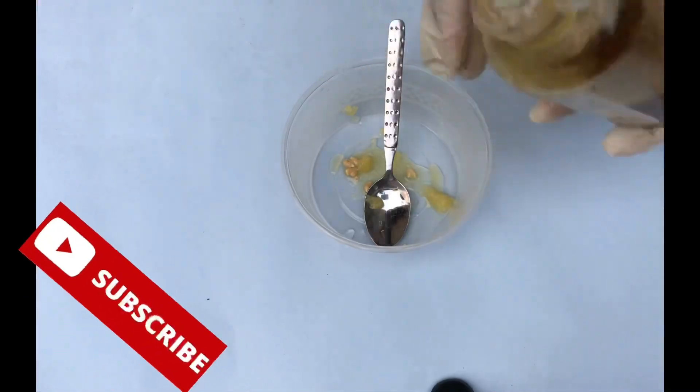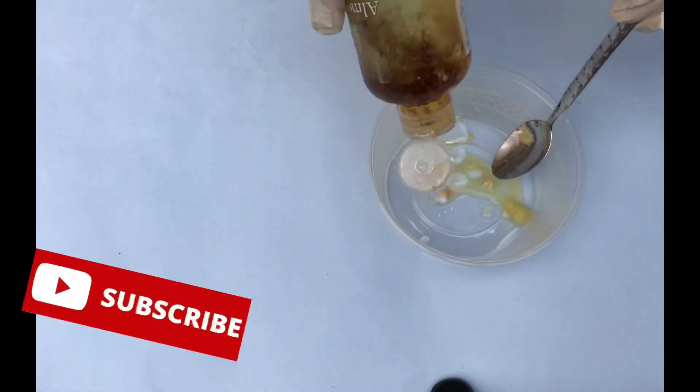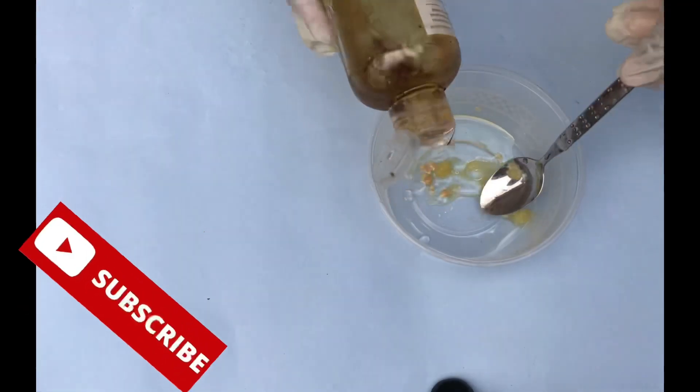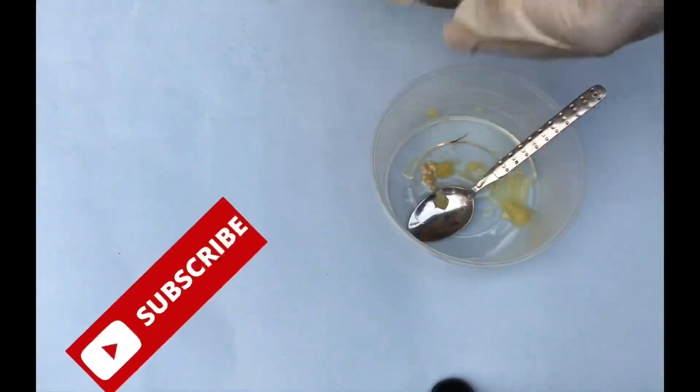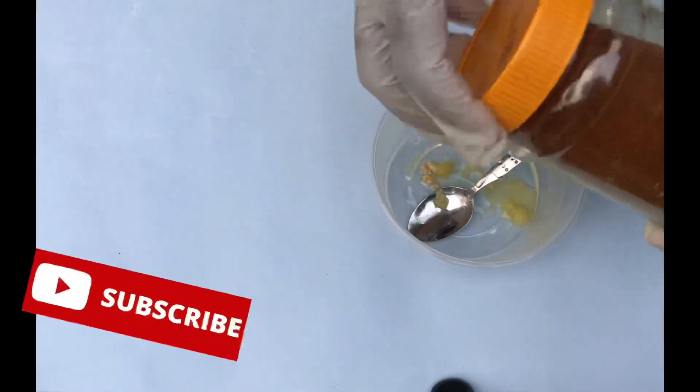The next ingredient that we'll be needing is our almond oil. Almond oil hydrates the skin and improves its elasticity and suppleness. It helps to reduce stretch marks from the stomach, from the thighs, breast, and other parts of the body.